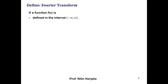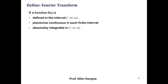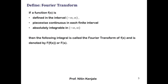Let us see the formal definition of Fourier transform. If a function f of x is defined in the interval minus infinity to infinity, and is piecewise continuous in each finite interval, and is absolutely integrable in the interval minus infinity to infinity, then the following integral is called the Fourier transform of f of x, denoted by capital F of f of x, or simply F of s.